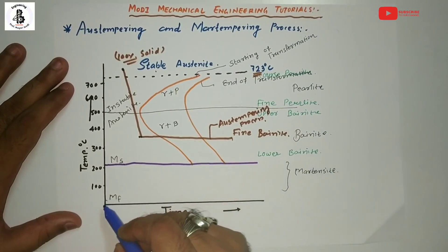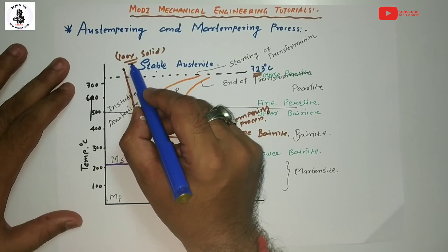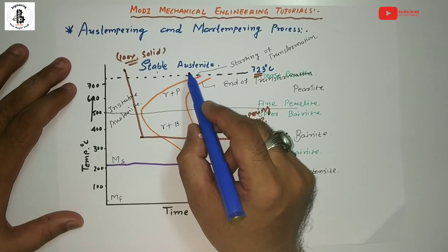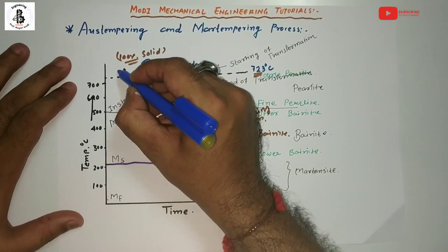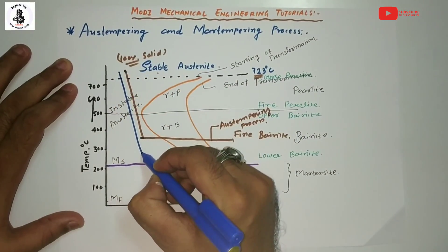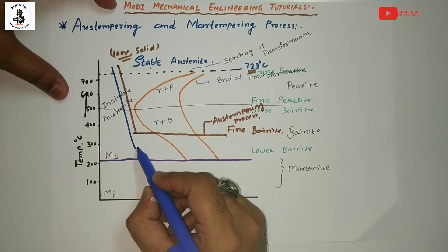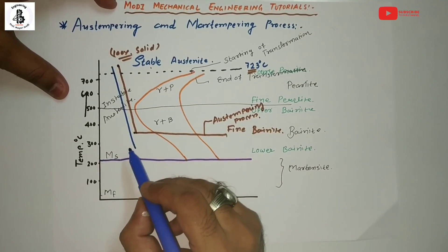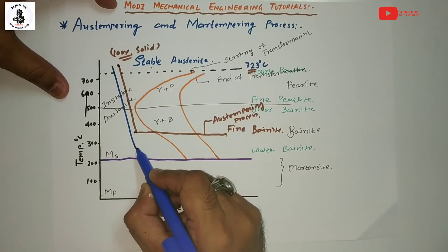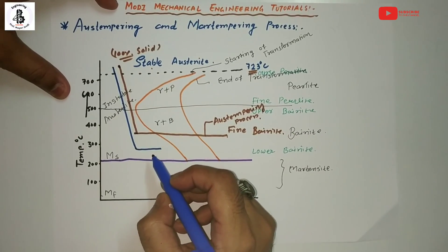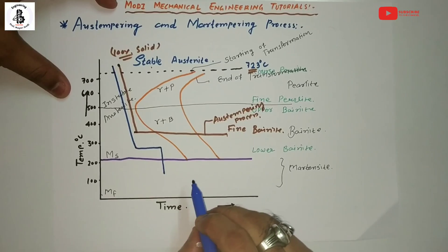Now focusing on the martempering process: the material is heated up to above 723 degrees centigrade to give 100 percent solid austenite, then similarly it will be rapidly cooled to around 250 degrees centigrade. The workpiece is held at this temperature until the outside temperature equals the inside temperature. After that, the part is heated and cooled at a moderate rate, but it will never touch the transformation line, and then it is cooled into the martensite structure.